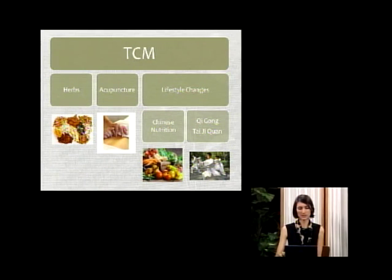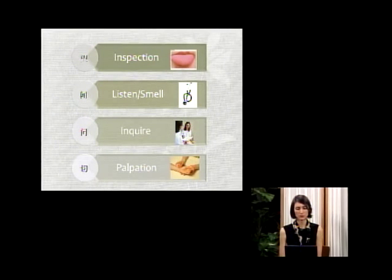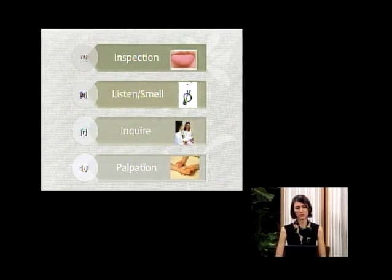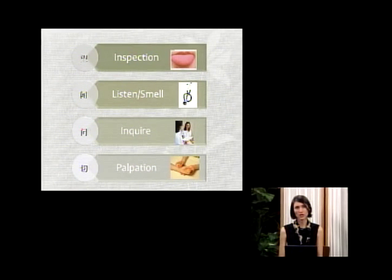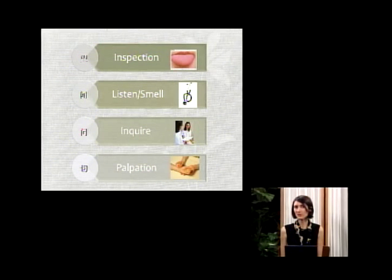Now let's take a look at our main diagnostic principles. In Chinese medicine these couple with Western medicine and have a lot of places where they are the same, but we are looking for different clues to what's going on in the body. The first principle is inspection — we are looking at the body: the size and shape of the body, the position of the body, the face, and the different colors and shapes of the face.